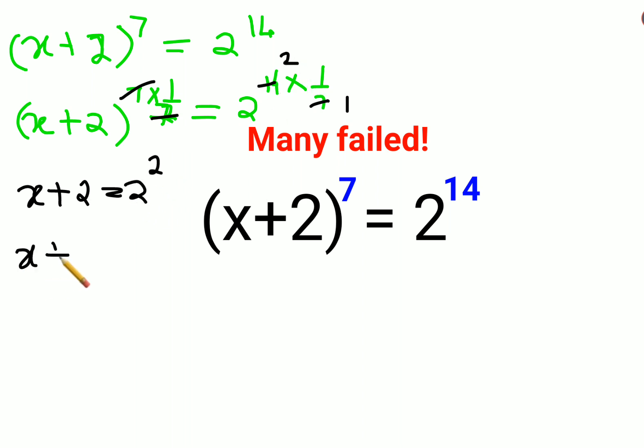This gives us x+2 equals 4. Taking 2 to the other side, we get x equals 4 minus 2. So the value of x comes out to be 2.